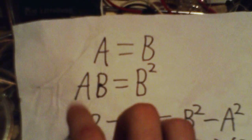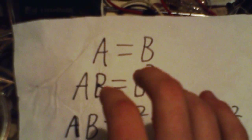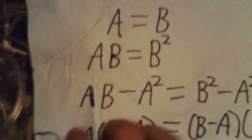The method that they use is that A equals B, and that's the initial condition. Multiply both sides by B so you get AB equals B squared.